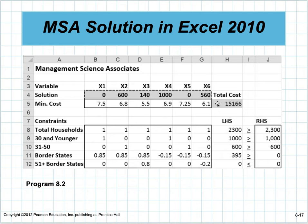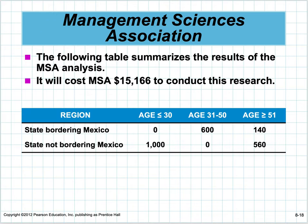The solution will cost $15,000. It will survey exactly 2,300 people — that's a binding constraint — and several other constraints are also binding, leaving little wiggle room. Notice the results show two zeros, meaning some demographic segments get no respondents. You might need to go back and add minimum constraints for those groups, which would increase costs somewhat.